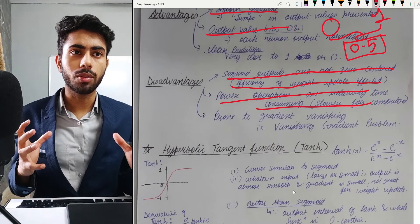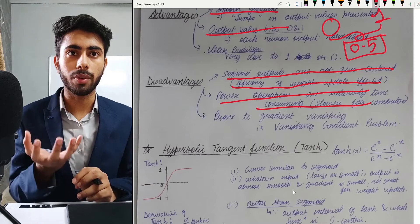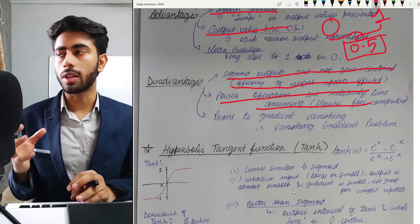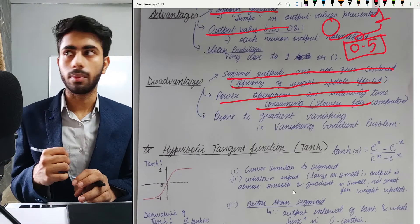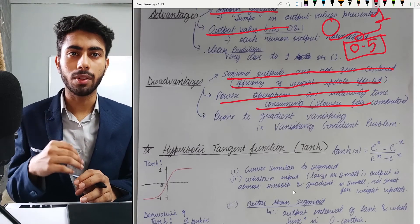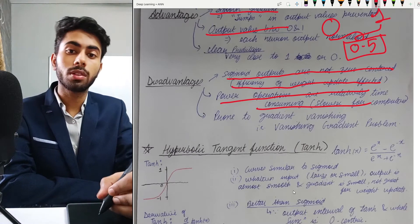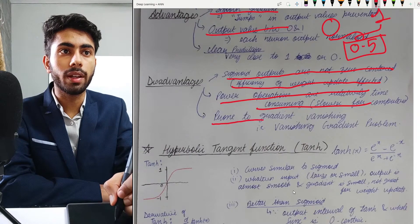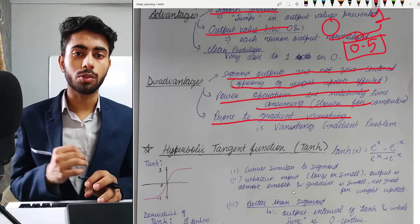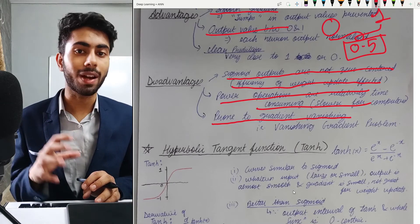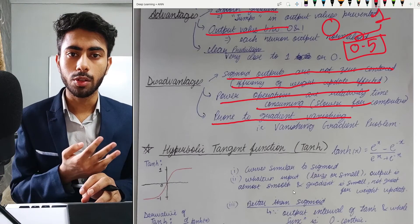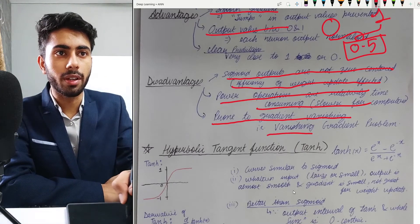If you have a very large neural network, you will easily notice the difference between using sigmoid and other activation functions like ReLU, because sigmoid takes much longer due to its exponential terms. The third and biggest disadvantage is that sigmoid is prone to the vanishing gradient problem, which is a very popular topic also commonly asked in interviews. A dedicated video on vanishing gradient covers the logic, intuition, and mathematics behind it.